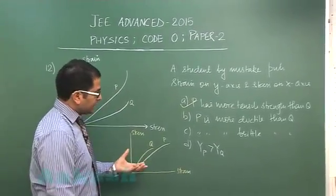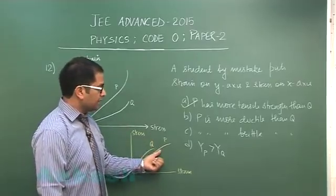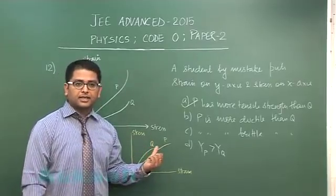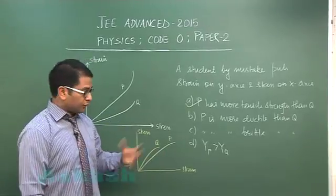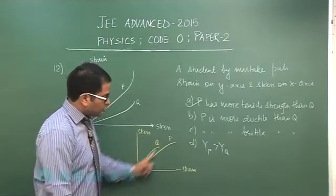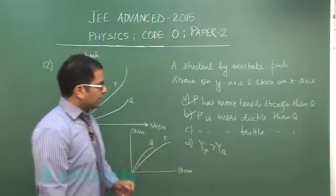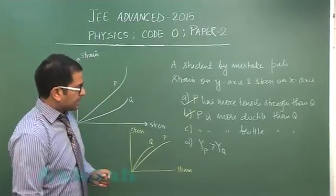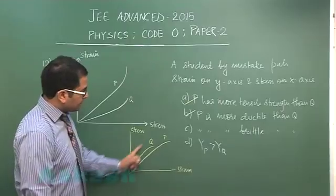Regarding ductility the same logic more or less explains the more ductility of P as compared to Q because ductility the ability to be drawn in form of wire of course without breaking and that too is demonstrated by P. While when it comes for brittleness Q is more brittle because you could see that the breaking point of Q is reached earlier as compared to P.